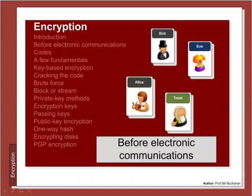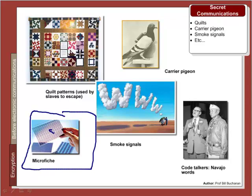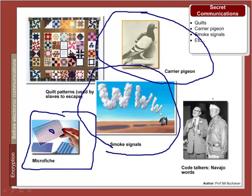What were some of the methods used before electronic communications? We have all seen examples of microfiche, where secret messages could be stored in very small areas. The Indians used smoke signals. Carrier pigeons have been used extensively. In the Second World War, Navajo words were used to pass secret codes. Quilt patterns used by American slaves actually described a map of how to escape.